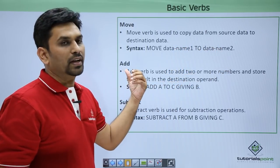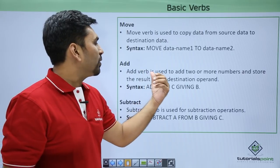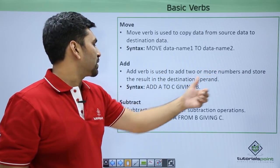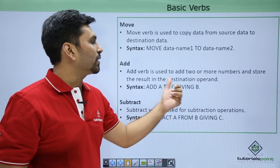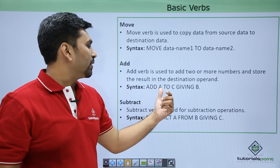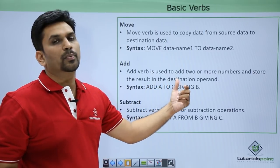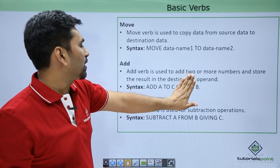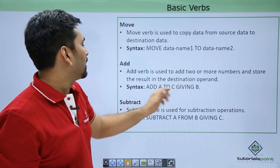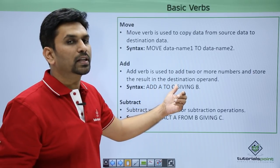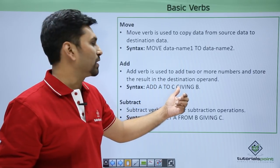Then we have add. The add verb is used to add two or more numbers and store the result in the destination operand. So 'add A to C giving B' — it will add A to C and store the result in B. If you eliminate the giving clause then it will add A to C and the result will be stored in C itself.